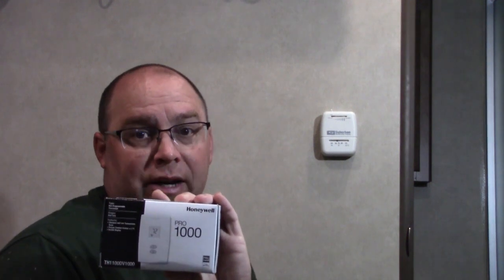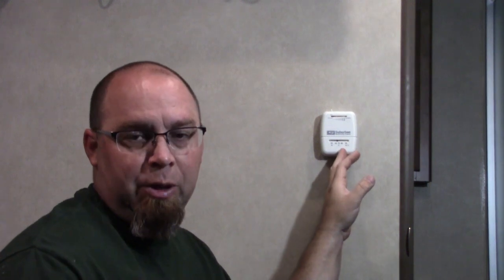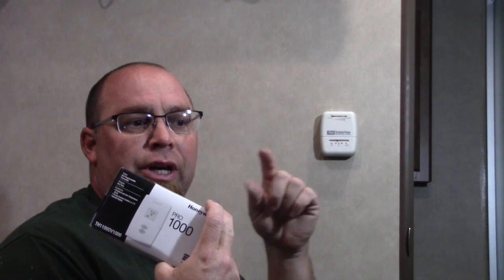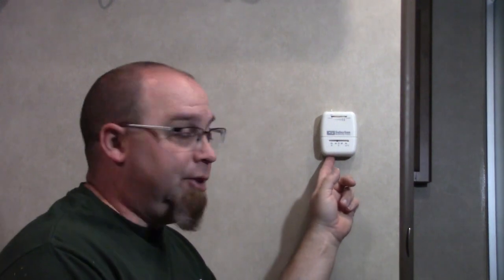After doing some research, came down and decided to get the Honeywell Pro 1000. This is a heat only digital thermostat. It's rated at 24 volts but we've only got 12 volts coming to the thermostat, but because this runs off of two AAA batteries it will actually self power itself and function and operate our heat without any trouble. I'm gonna tag you along while I do the replacement on it.